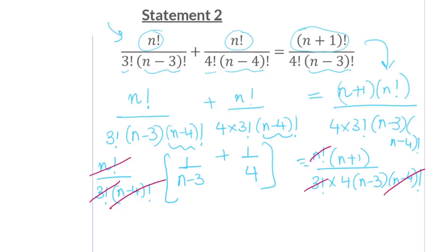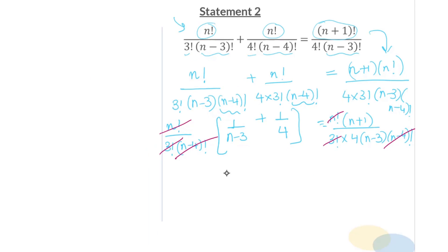Now, what am I left with? Let me simplify this. 4 plus N minus 3 over 4 into N minus 3 equals N plus 1 over 4 into N minus 3. What also gets canceled out are these terms in the denominator.